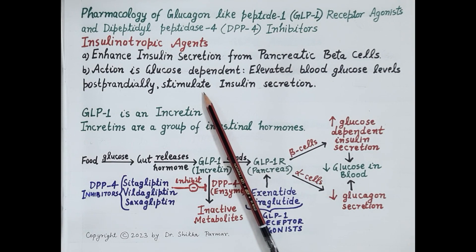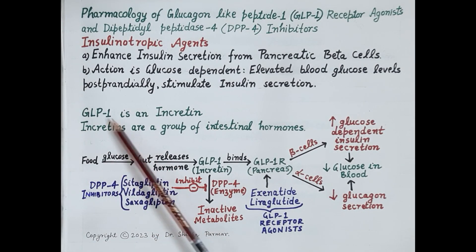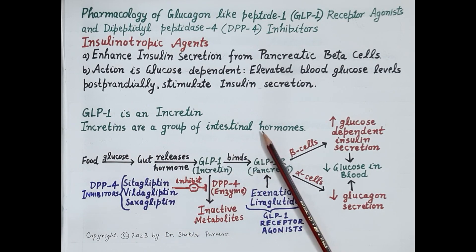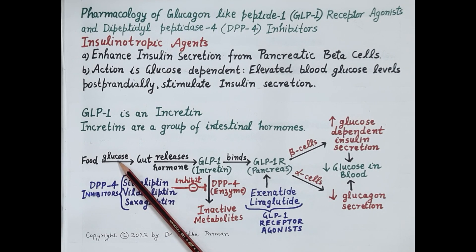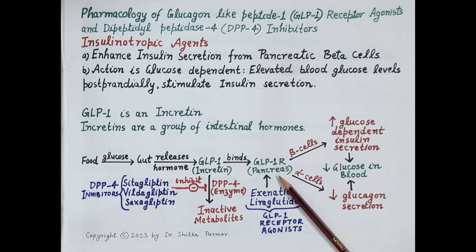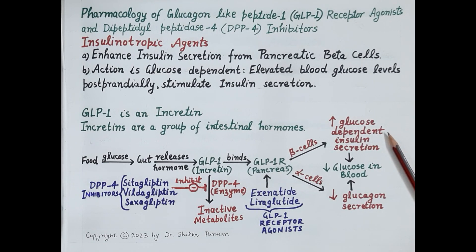Before discussing pharmacology of these drugs, let's first understand what is GLP-1 and what is DPP-4. GLP-1, that is glucagon-like peptide 1, is an incretin. Incretins are a group of intestinal hormones. Carbohydrates in the food we eat are broken down to glucose. This glucose stimulates the gut to release GLP-1. GLP-1 binds to GLP-1 receptors on the pancreas, which induces release of insulin from pancreatic beta cells in response to high glucose levels in the blood. This insulin causes transportation of glucose in the blood to the body cells and therefore reduces glucose in the blood.